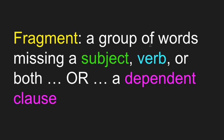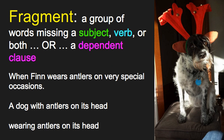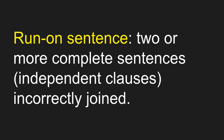A fragment can also be a group of words missing a subject, a verb, or both. Here are some examples. The first we've already covered — the dependent clause: 'When Finn wears antlers on very special occasions.' It has a subject and a verb, but it can't stand on its own. Here's a fragment missing a verb: 'A dog with antlers on its head' — no action word, so we have a fragment. And here we're missing a subject: 'Wearing antlers on its head' — who's doing the wearing? We don't know, so we have a fragment.